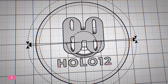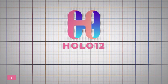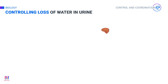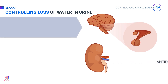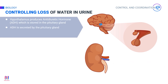Controlling the water level in the blood is achieved through a hormone known as the antidiuretic hormone, or ADH. Diuretic means water pills, so antidiuretic means the opposite. This hormone is produced in the hypothalamus and stored in the pituitary gland. When the body needs to control the loss of water, the pituitary secretes ADH into the blood, which travels all the way to reach the kidney tubules, where it causes water to be reabsorbed from the filtrate, resulting in urine with less water.